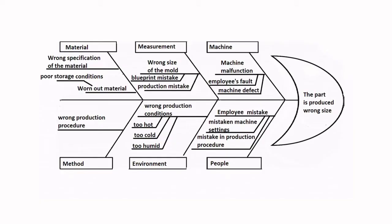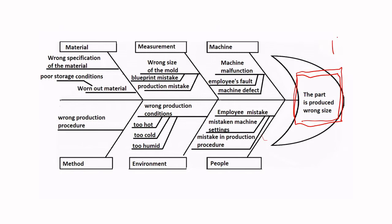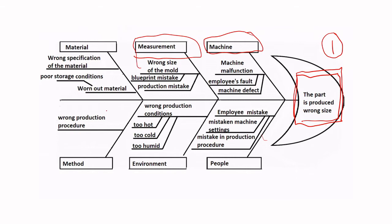Let's jump right in. This is a cause and effect diagram. You can see why it's called a fishbone diagram, because you've got these different prongs. First off, you identify what is the problem that needs to be investigated — for example, a part that is the wrong size. Then you've got these categories along the top: machines, measurements, materials, methods, environment, people. The main concept is that you're thinking in some really broad categories.